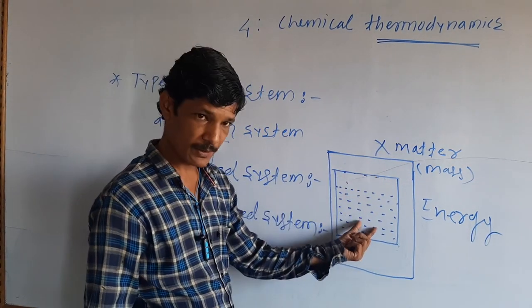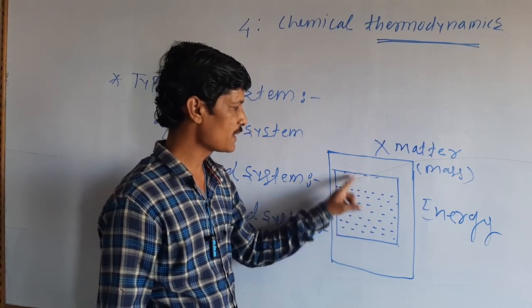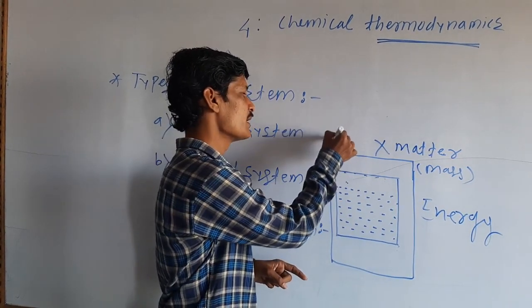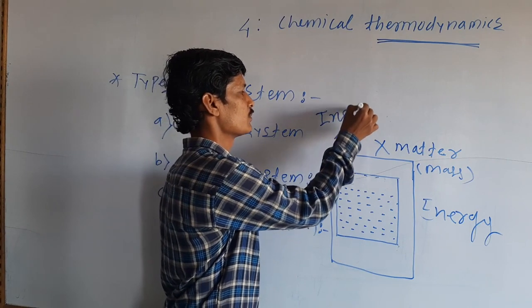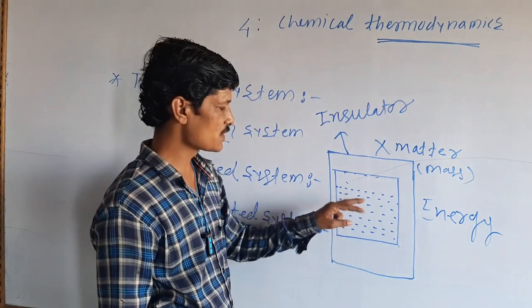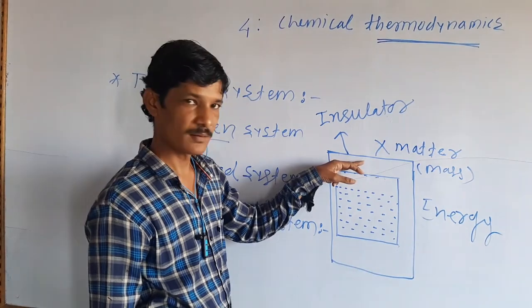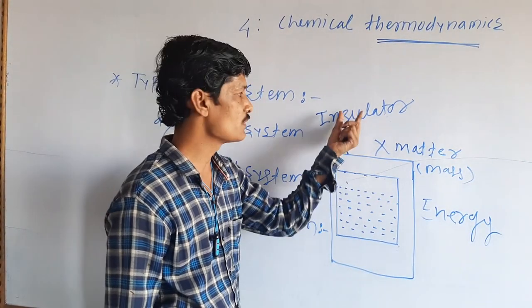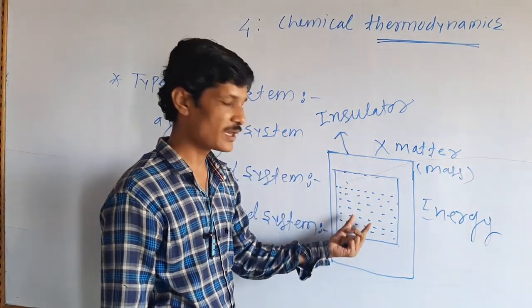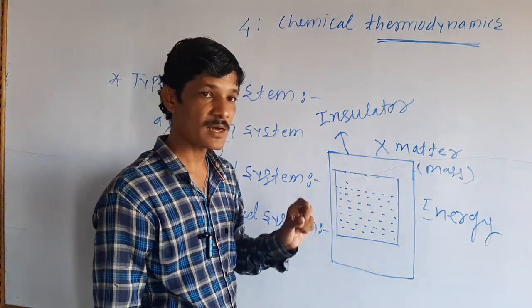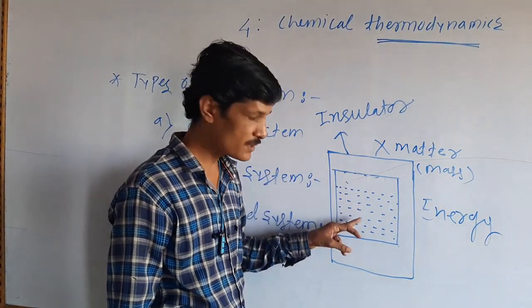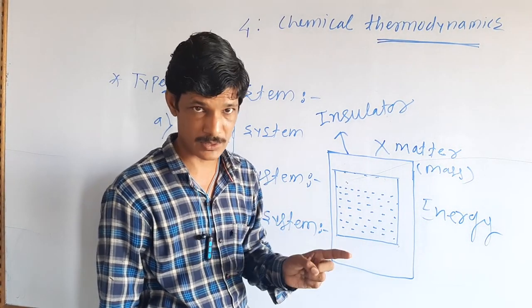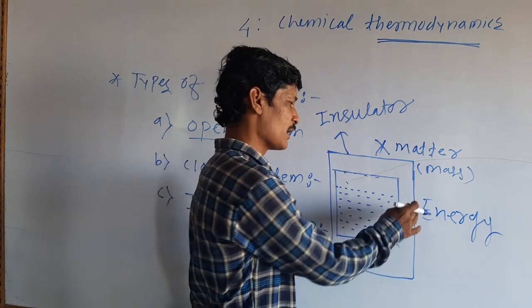For example, there is hot water in a well-insulated container, like a thermos flask. The insulation prevents heat or energy exchange with the surroundings. Water will not be able to exchange matter with the outside. There is no exchange of matter and no exchange of energy. The system which cannot exchange either energy or matter with the surroundings is called an isolated system.